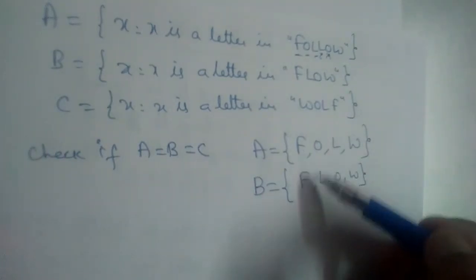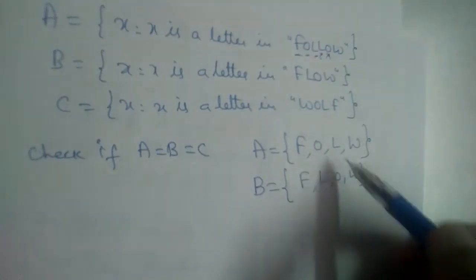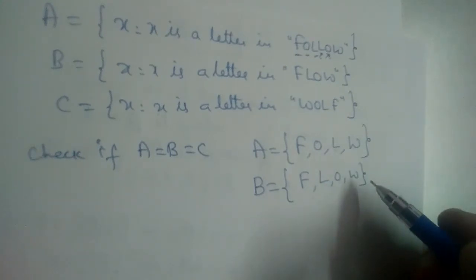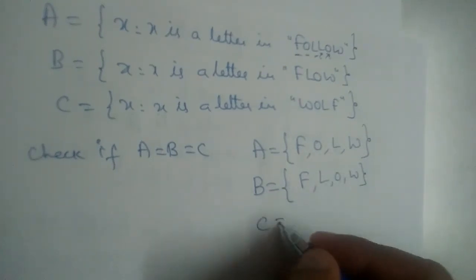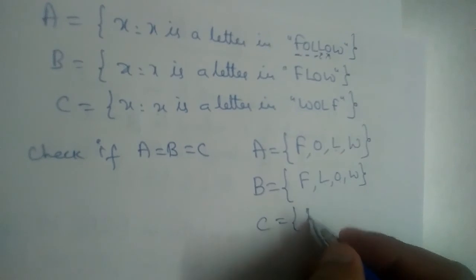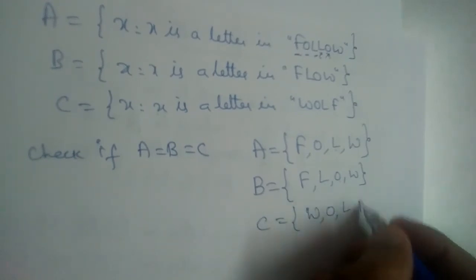Now we can say these two are equal. C, F is here, O, L and W, right? Now let us write C. W, O, L, F.